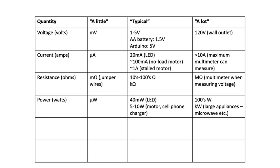When you start getting up into the hundreds or thousands of watts, you're talking about larger appliances — microwave, dishwasher, electric dryer — things that are really drawing a lot of electricity, up in the kilowatts. Older incandescent light bulbs at their brightest would be 100 or 150 watts, but LED bulbs now take much less power than that. Things in the microwatts are kind of negligible for what we're usually caring about here.